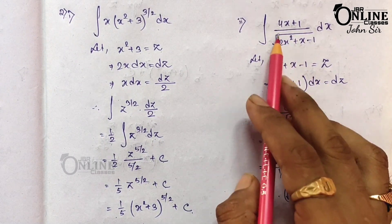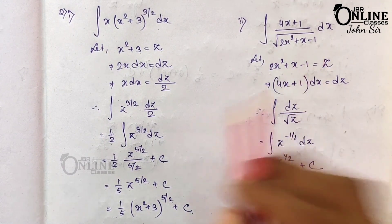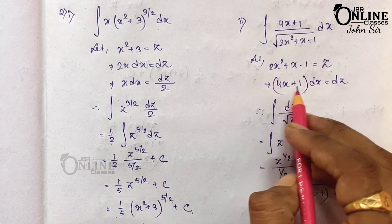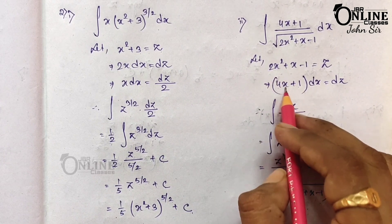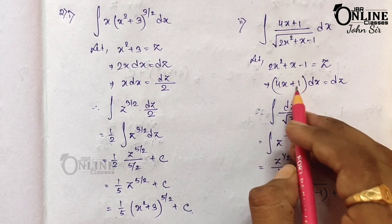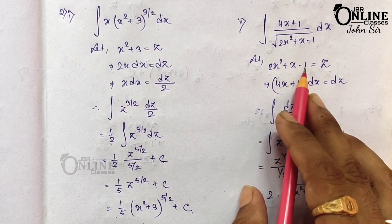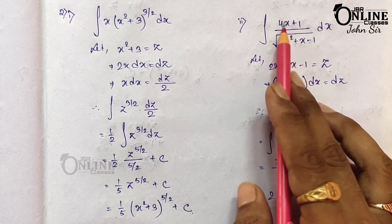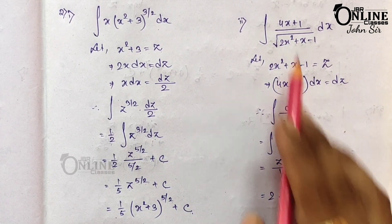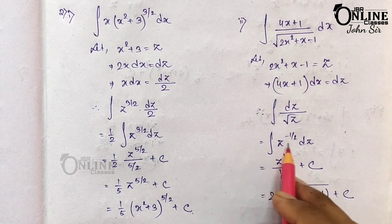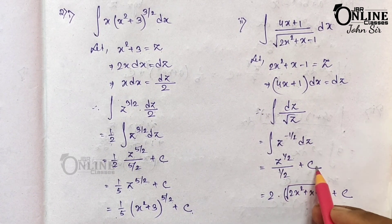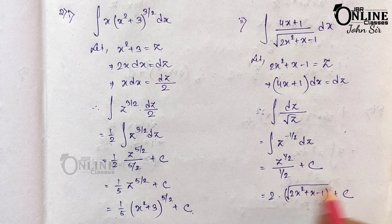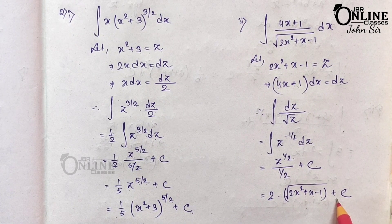Problem 2.2: ∫(4x + 1)√(2x² + x − 1) dx. Let 2x² + x − 1 = z. The derivative is 4x + 1, so (4x + 1)dx = dz. The integral becomes ∫z^(1/2) dz = z^(1/2) / (1/2) + C = 2√z + C = 2√(2x² + x − 1) + C.